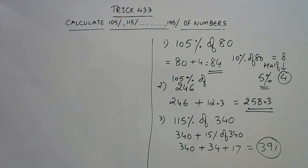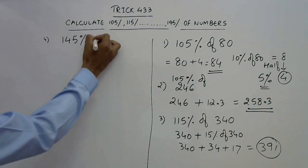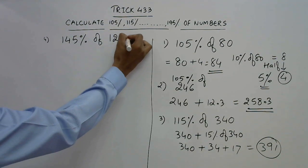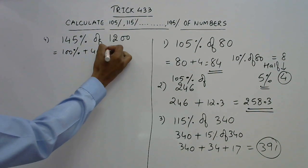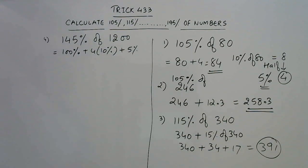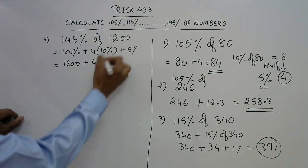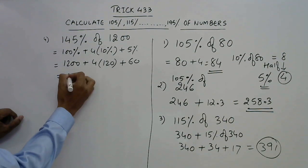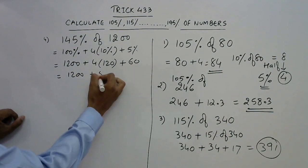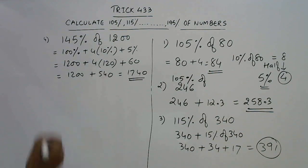Let's try 145% of 1200. Break 145 into 100% plus 4×10% plus 5%. 100% is 1200. 4×10% means 4×120 = 480. 5% is half of 120, which is 60. So 1200 plus 480 plus 60 equals 1740. So 1740 is 145% of 1200.